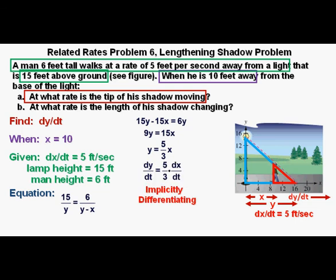Implicitly differentiating, we get dy/dt equals 5 thirds dx/dt. And substituting 5 feet per second for dx/dt, we get dy/dt equals 5 thirds times 5 feet per second,